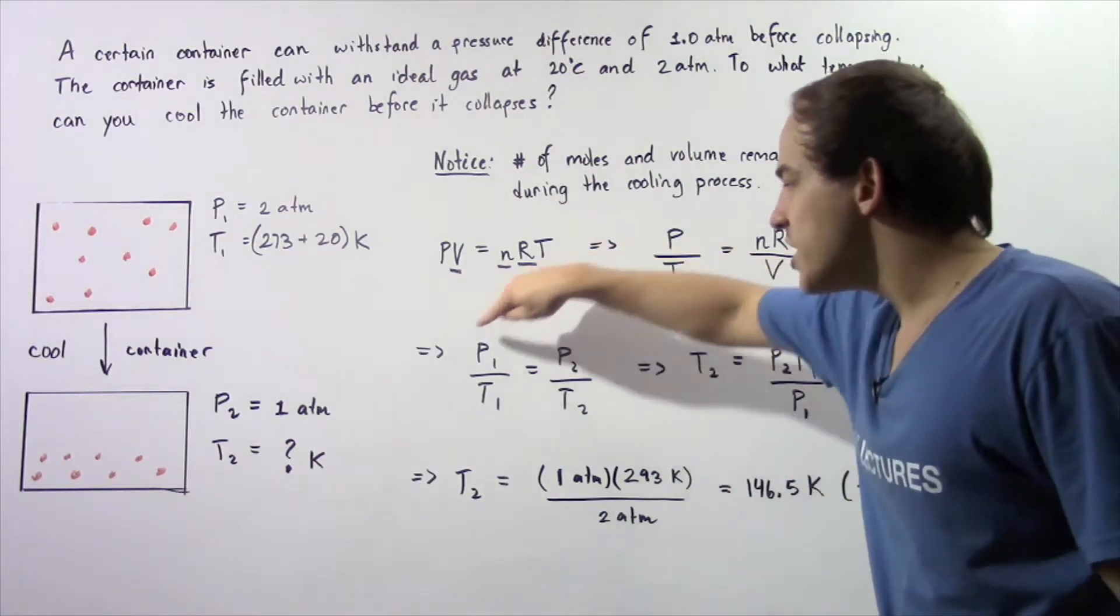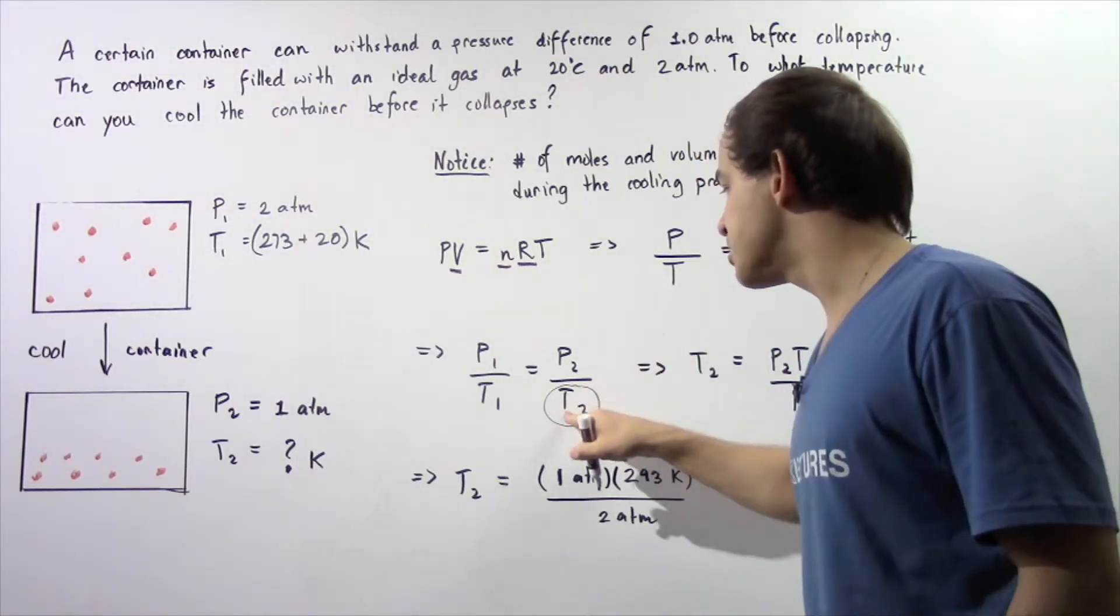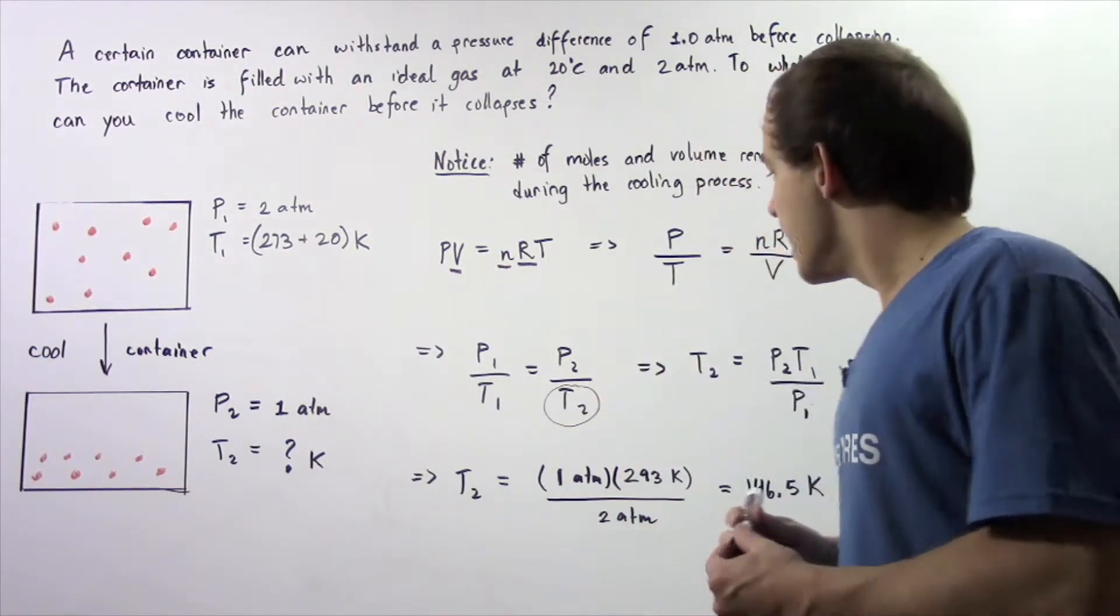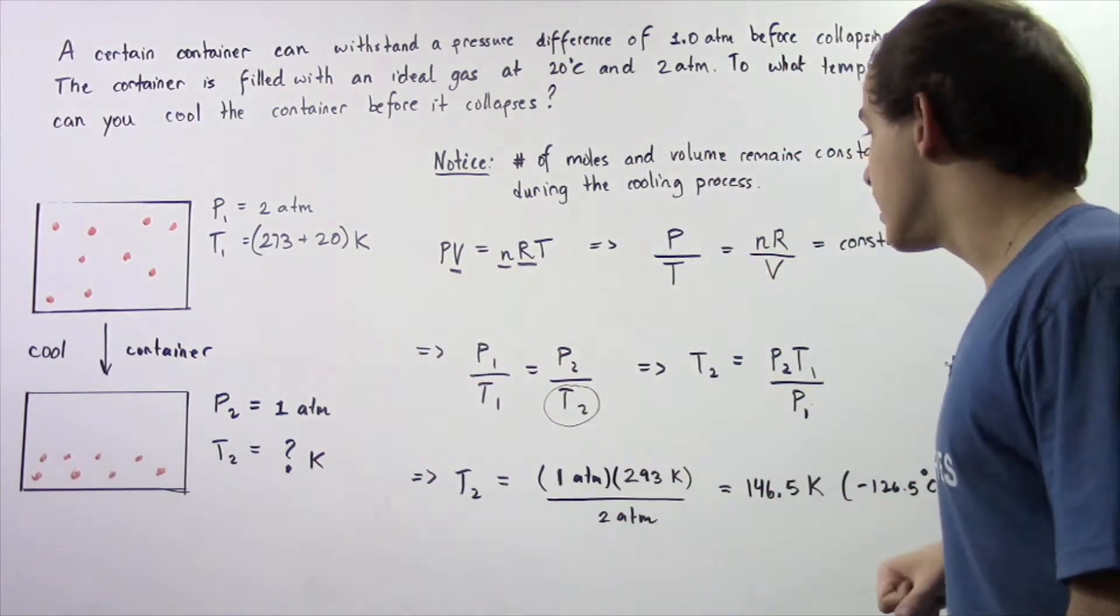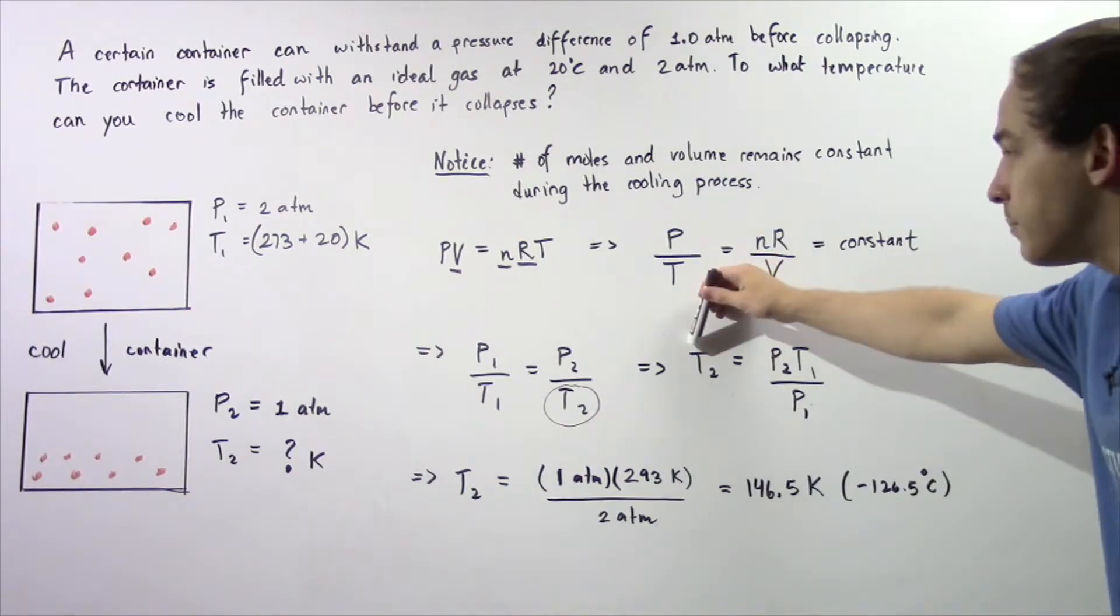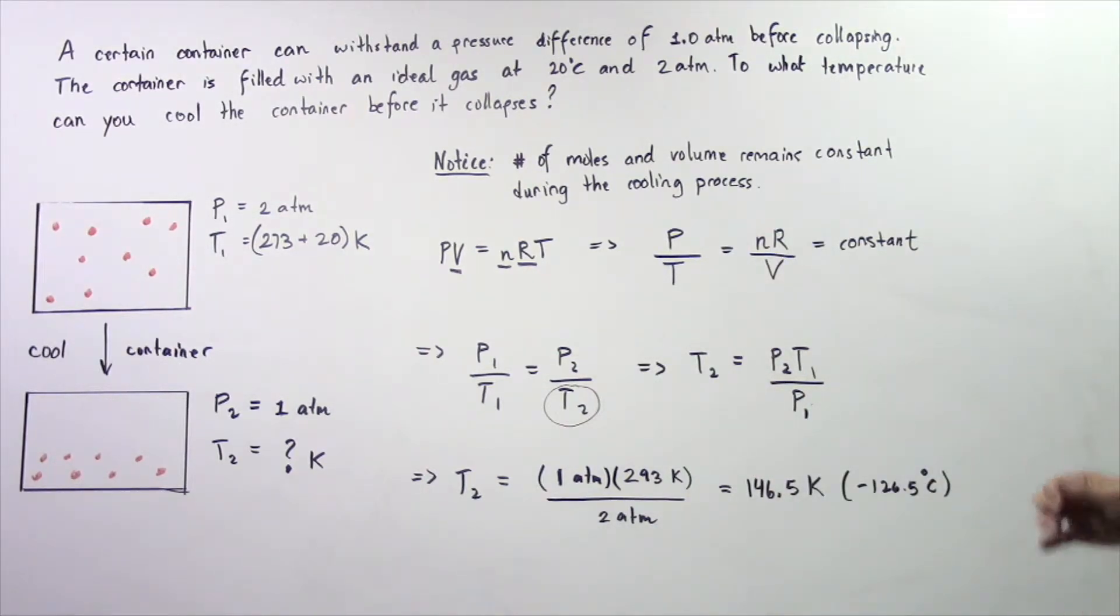Let's rearrange our equation and solve for our temperature 2. This is what we want to calculate. We bring this to the left side, everything else to the right side. So temperature at system 2 is equal to P2 times T1 divided by P1.